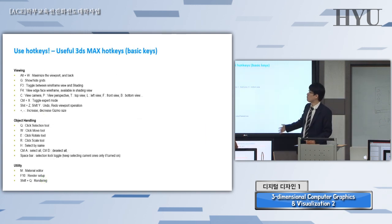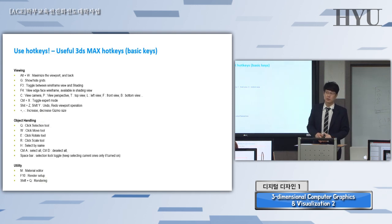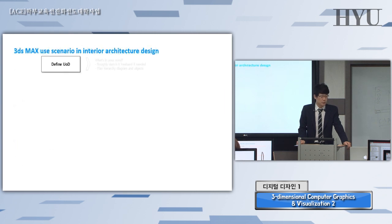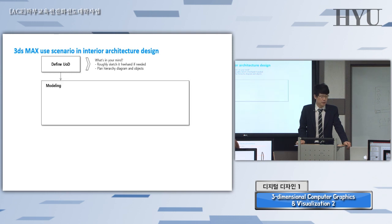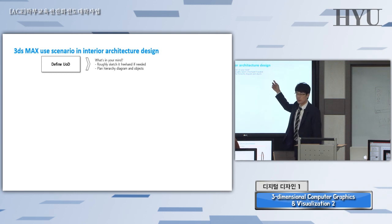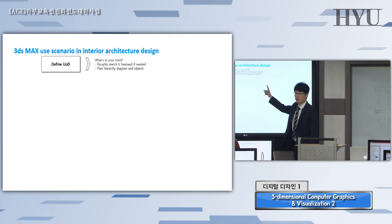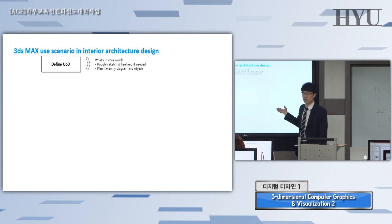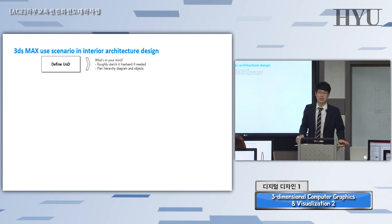I listed up the fundamental hotkeys of 3D Max so that you can simply make and visualize something in the 3D Max interface. Also, the 3D Max use scenario for interior architecture design — defining the UOD (Universe of Discourse) is the most important thing. A large plane, your furniture, your interior objects, one single box, a daylight system or photometric lights, camera or perspective view, and some material assigned — and then you can create one type of photorealistic rendering output.